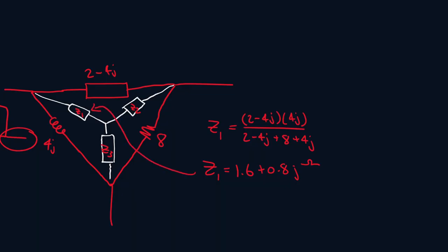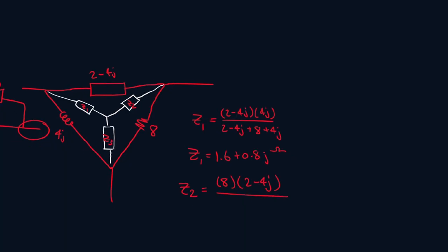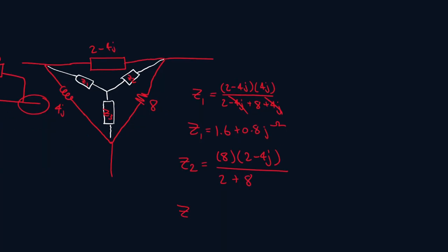Now let's do Z2. I see the 4j is directly below it, so on the top it will be 8 times 2 minus 4j, and on the bottom these two just cancel out, so I just do 2 plus 8 here. So that's 1.6 minus 3.2j.